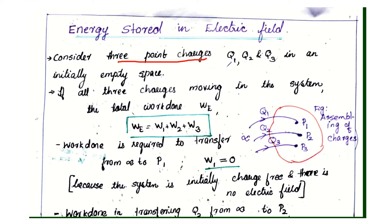We are considering three point charges Q1, Q2, and Q3. If three charges are moving into the system, the total work done WE is equal to W1 plus W2 plus W3.